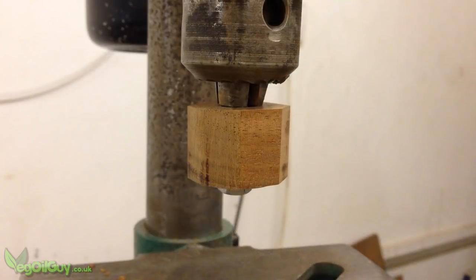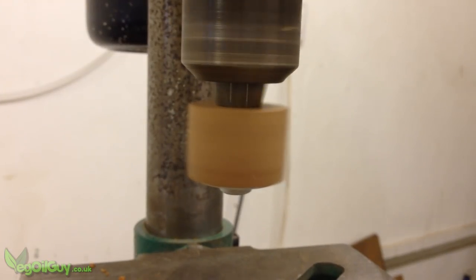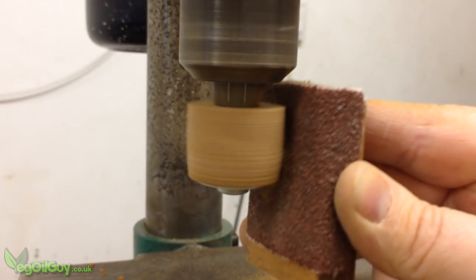The smaller scrap was also cut with 8 sides before having a hole drilled through its centre. I then used my drill press to turn and sand the piece into a cylinder.